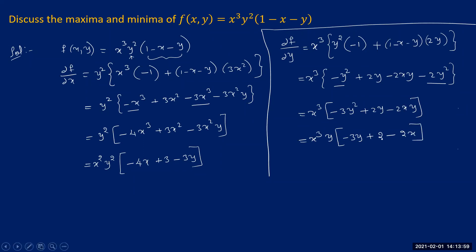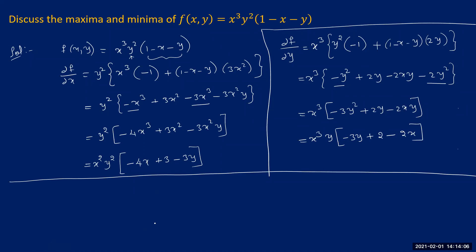We now have both ∂f/∂x and ∂f/∂y. The next step is to equate both to zero. Setting ∂f/∂x = 0: x²y²(−4x − 3y + 3) = 0.